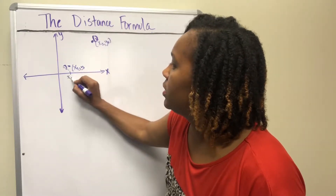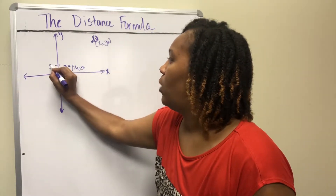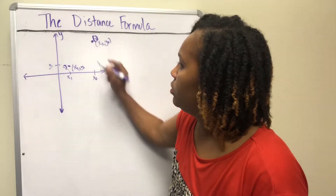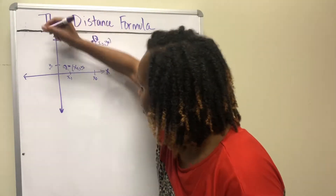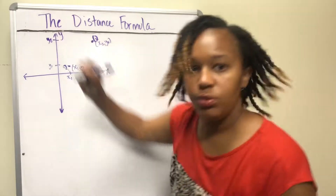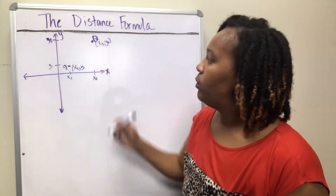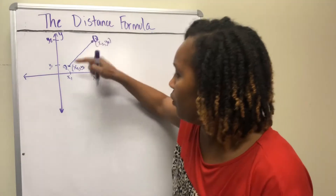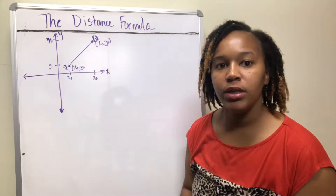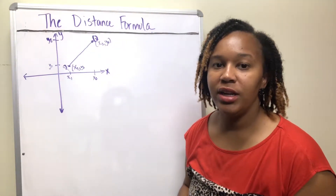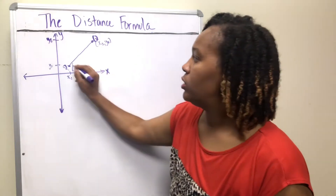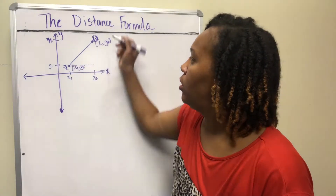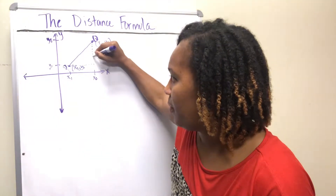So x1 and y1 represent the coordinates of P, and x2 and y2 represent the coordinates of Q. We want to figure out the length or distance between those two points. The way we can do that is by creating a right triangle, with that distance being the hypotenuse.